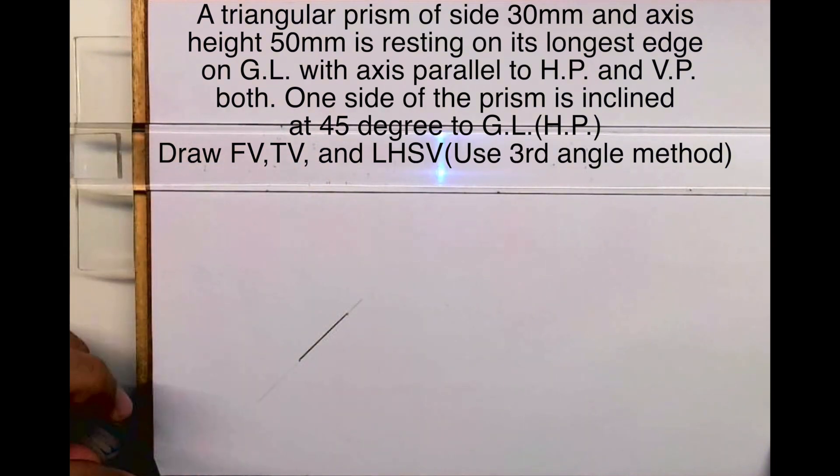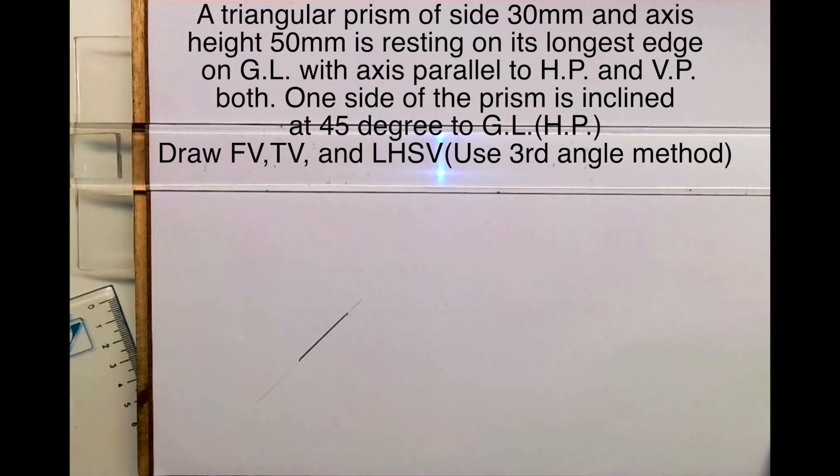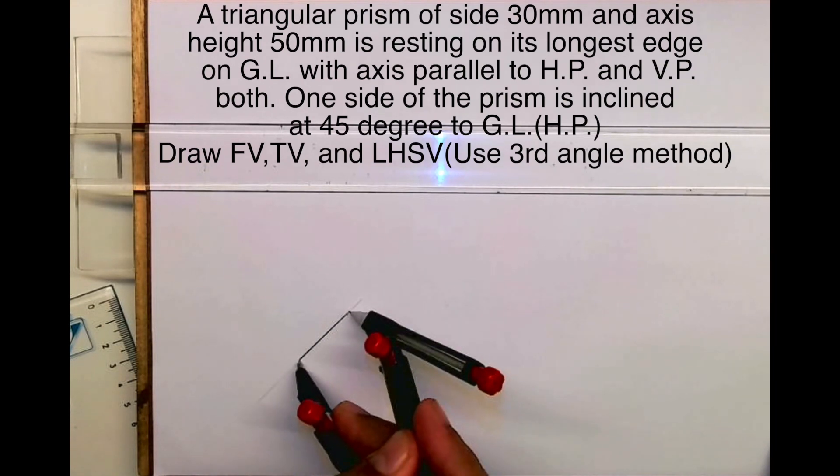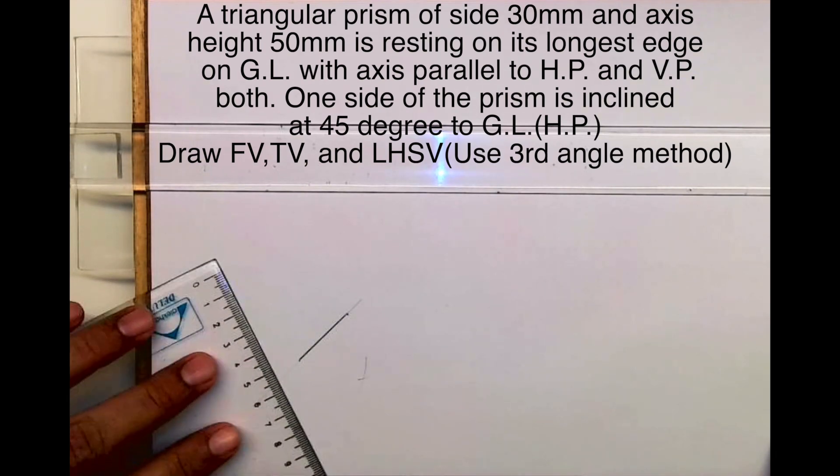Whenever this is GL, we'll draw 45 degrees and will mark the side on it, and then we'll draw the triangle. So we are done with the side view.